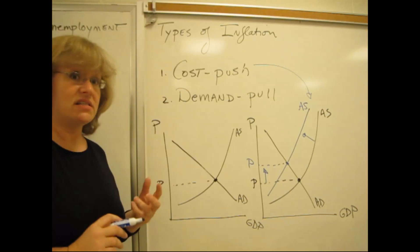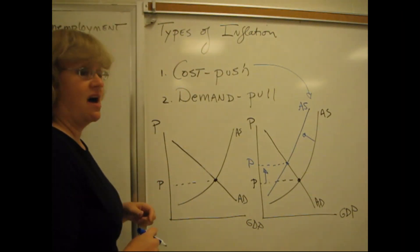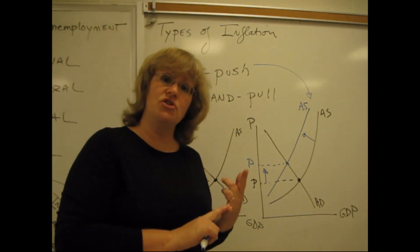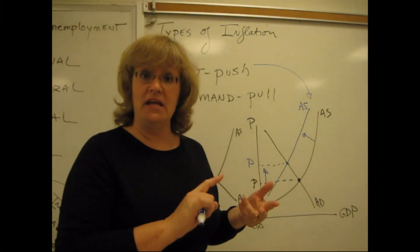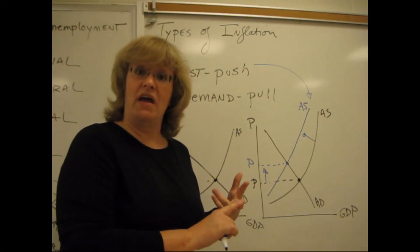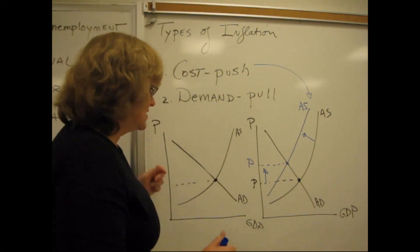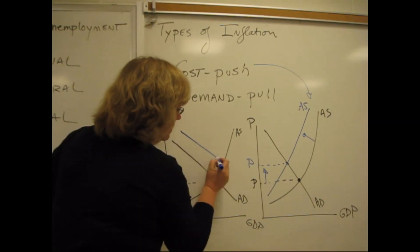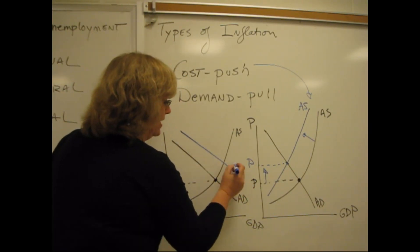By contrast, if it comes from the demand side of the economy, if there's an increase in consumption demand, investment demand, government spending, demand from the government, or net exports, the international demand, the demand curve shifts to the right.